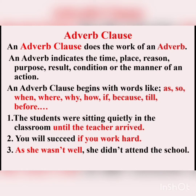Adverbial clauses are introduced by subordinating conjunctions like as, so, when, where, why, how, if, because, till, etc. For example, 'The students were sitting quietly in the classroom until the teacher arrived.' The clause 'until the teacher arrived' talks about the action performed — it is an adverbial clause. 'You will succeed if you work hard' — 'if you work hard' is a subordinate clause and it is an adverbial clause describing the condition for succeeding. It gives the reason or condition, so it is an adverbial clause.